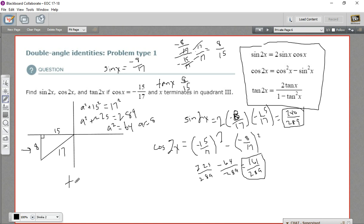And all we've got left now is the tangent of 2x. And that is 2 times the tangent, and the tangent is 8 15ths, over 1 minus the tangent squared. So 8 15ths squared.